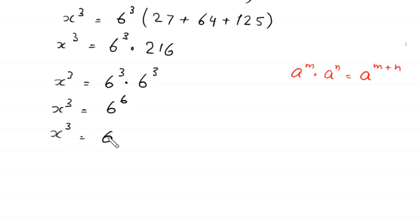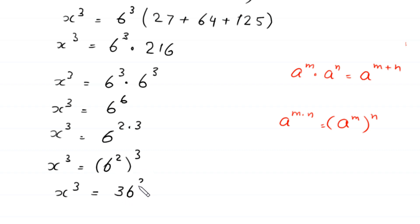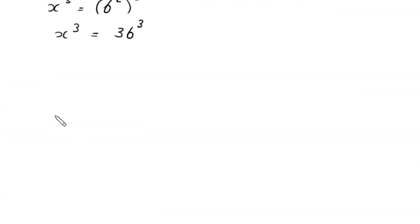X cubed is equal to 6 to the power 6. Now, 6 can be written as 2 times 3. Next, by using the power rule, 6 to the power 6 becomes (6 squared) whole to the power 3. And 6 squared is 36, so x cubed equals 36 cubed. Moving 36 cubed to the left-hand side, this equation becomes x cubed minus 36 cubed equals 0.